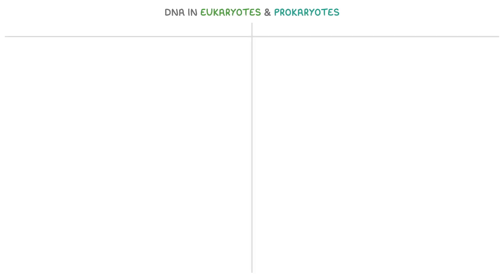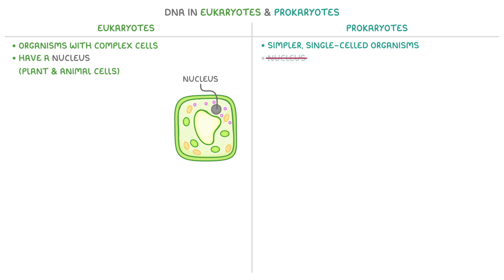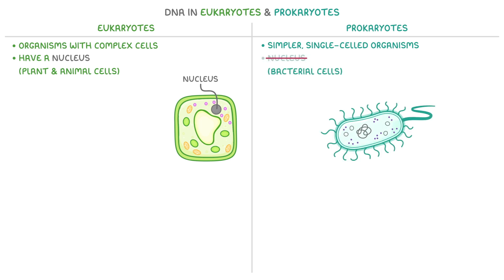Next, let's go over the differences between DNA in eukaryotes and prokaryotes. Eukaryotes are organisms with complex cells that have a nucleus, so that's things like plant and animal cells. Prokaryotes are simpler, single-celled organisms that don't have a nucleus, like bacterial cells.